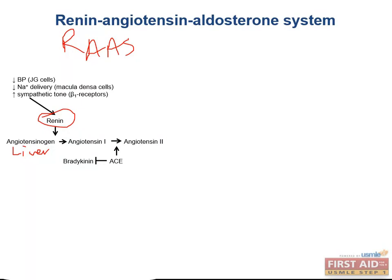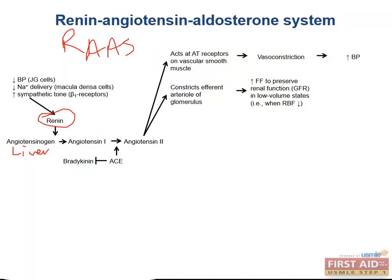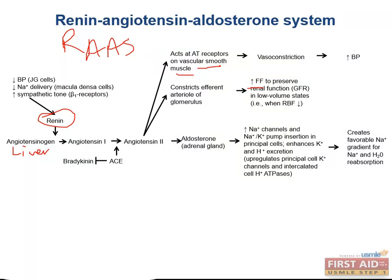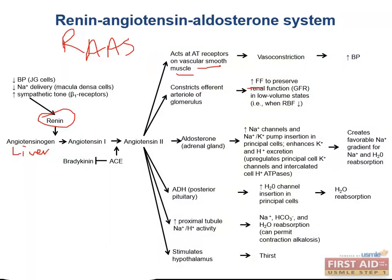Angiotensin 2 has a number of effects. First, it stimulates general vasoconstriction by activating vascular smooth muscle cells, leading to increased blood pressure. It also stimulates constriction of the efferent arterioles of the glomerulus, increasing the filtration fraction to preserve renal function in low-volume states. Additionally, angiotensin 2 stimulates the release of aldosterone from the adrenal gland, which stimulates sodium and water reabsorption in the collecting tubules, and it stimulates the release of antidiuretic hormone from the posterior pituitary, allowing water reabsorption through aquaporin channels.